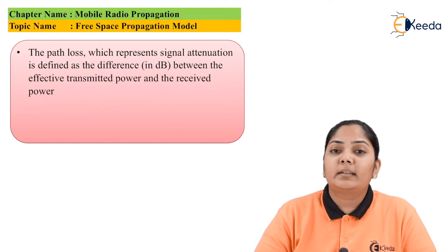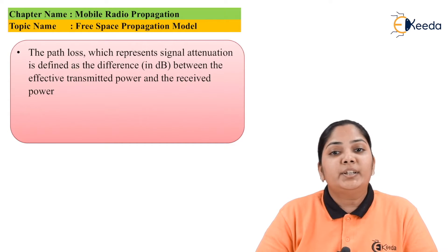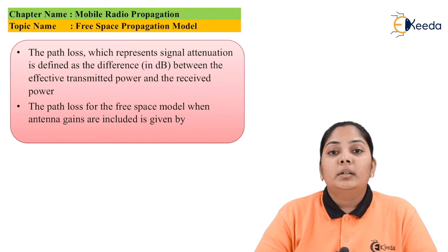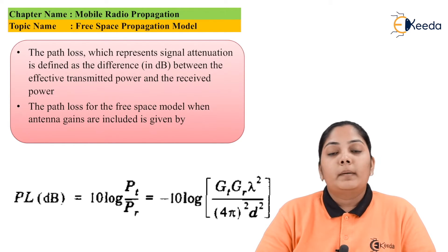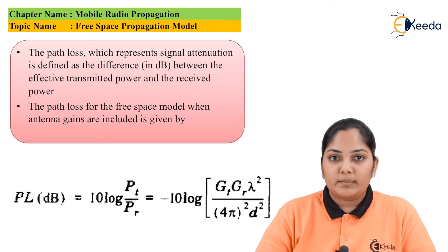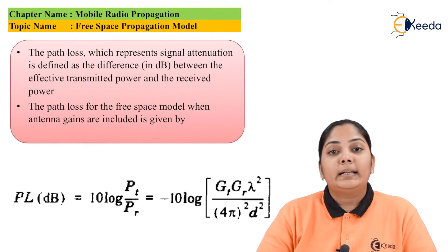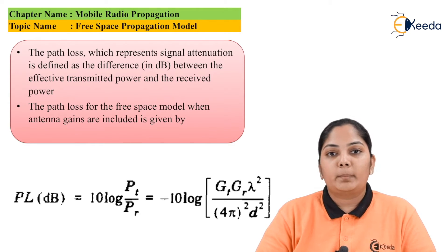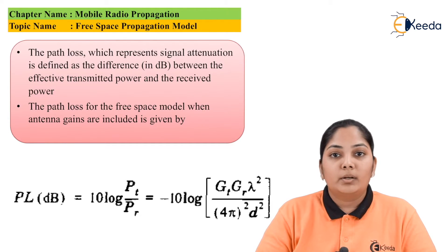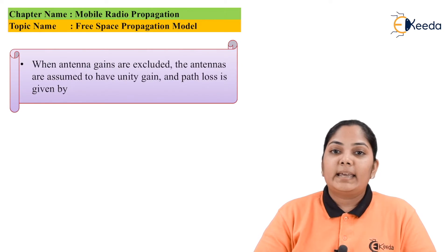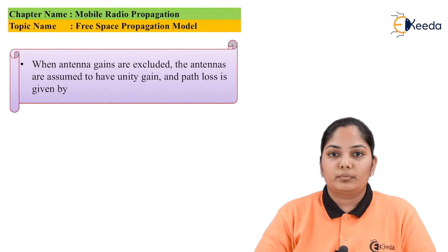Path loss is basically the signal attenuation, which occurs as the difference between the transmitted power and the received power. The path loss in a free space model when the antenna gains are included is given by: PL (dB) = 10 log(Pt / Pr) = −10 log[(Gt × Gr × λ²) / ((4π)² × d²)].